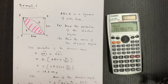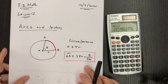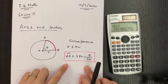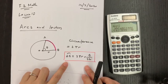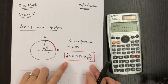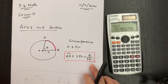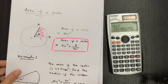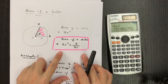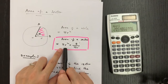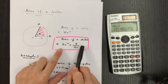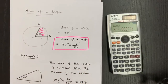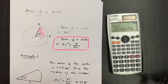That's all about today's lesson. Mainly, we have the arc length formula which is 2πr times theta over 360, and also the area of the sector which is the total area of circle πr² times theta over 360. Thank you for watching my video. I'll see you next time. Bye-bye.